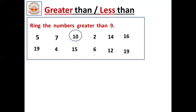Now 2. Is 2 a small number or big number compared to 9? It is a small number. 2 is less than 9, so we should not circle it. Now 14. Is 14 a big number or small number compared to 9? It is a big number, so we should circle it.